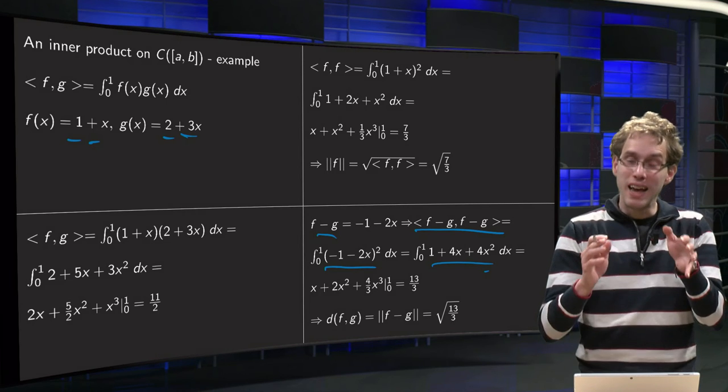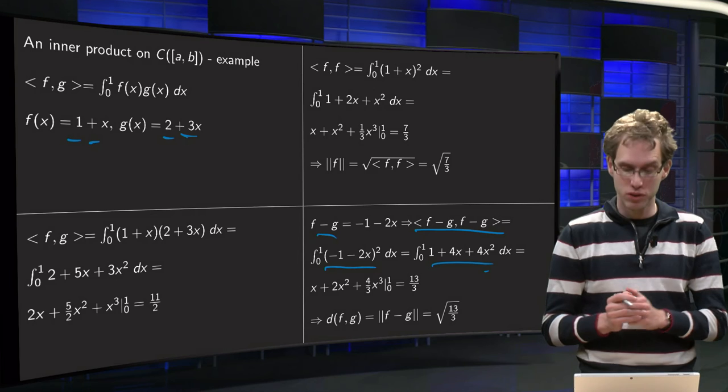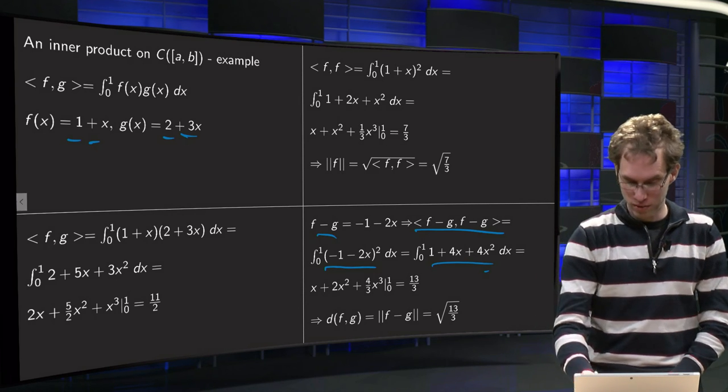So that means the inner product of f minus g with itself equals 13 over 3, and the distance between f and g equals the square root of that.